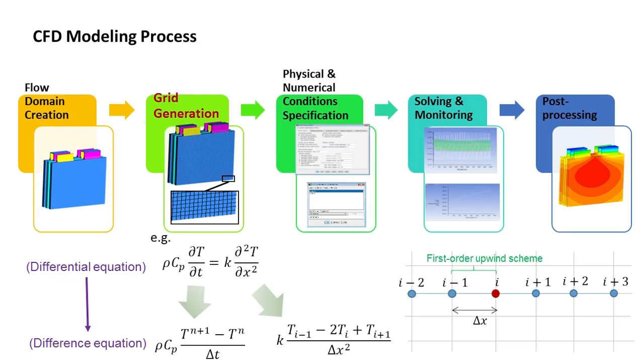Next, grid generation. Grid is a set of small elements that you obtain after the meshing process.